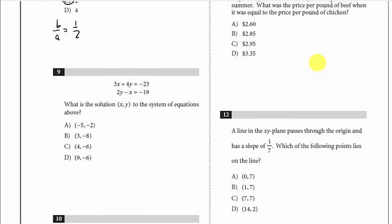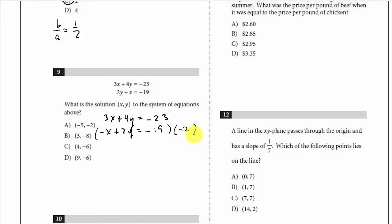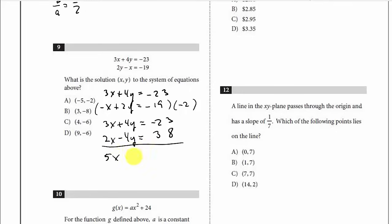What is the solution (x, y) to the system of equations? We can use the addition method. We have 3x plus 4y equals negative 23, and then negative x plus 2y equals negative 19. Multiply the second equation by negative 2: that gives 2x minus 4y equals 38. Adding the two equations gives 5x equals 15, so x equals 3. That's the only answer choice where x equals 3, so that's B.